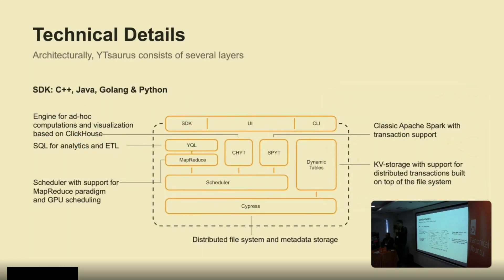These are our technical details — the most important and interesting slide. Waitisaurus consists of several layers. At the bottom is Cypress, our distributed file system and metadata storage. If you're familiar with Hadoop, it replaces Apache HDFS for file storage, Hive Metastore for metadata, and Apache Zookeeper for coordination — all in one component. Cypress is a transactional distributed file system where you can store metadata, and it supports not only files but also tables, which are our main storage object.